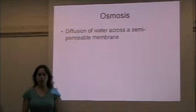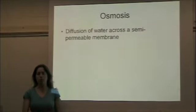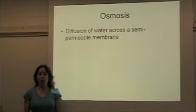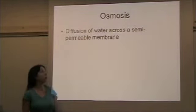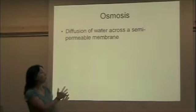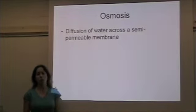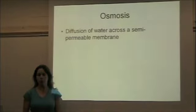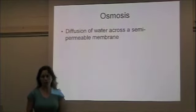You've learned about diffusion, the movement of molecules from high to low concentration across a semi-permeable membrane. Water is the most common substance that passes through the membrane of cells, so scientists have termed the diffusion of water as osmosis. So we're going to learn a little bit more about osmosis.